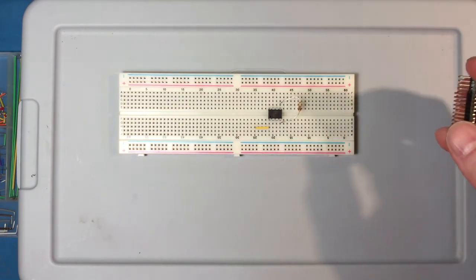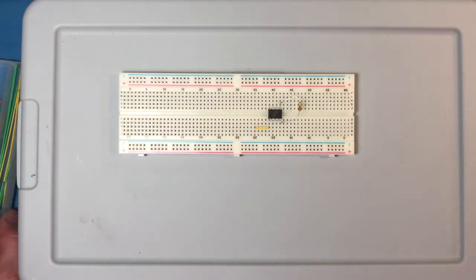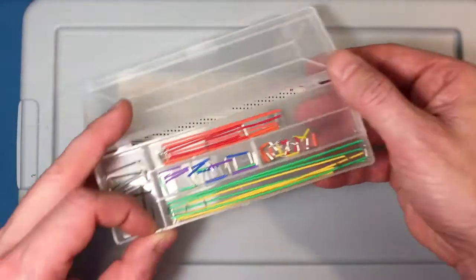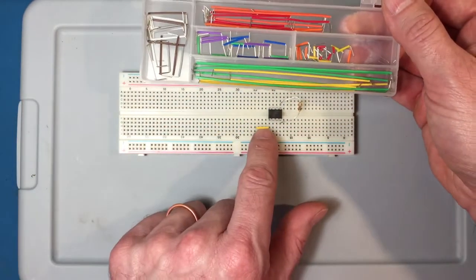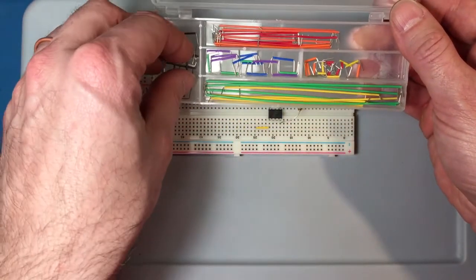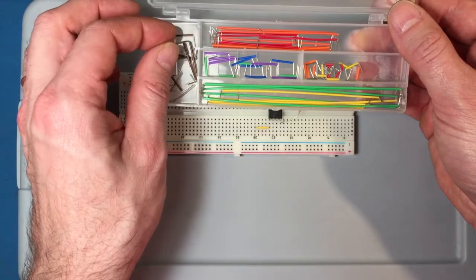And the sky is the limit here. So these jumper wires right here, which come in your kit, are used for making these connections, and the nice thing about them is they're preformed, and they're color-coded to different lengths.